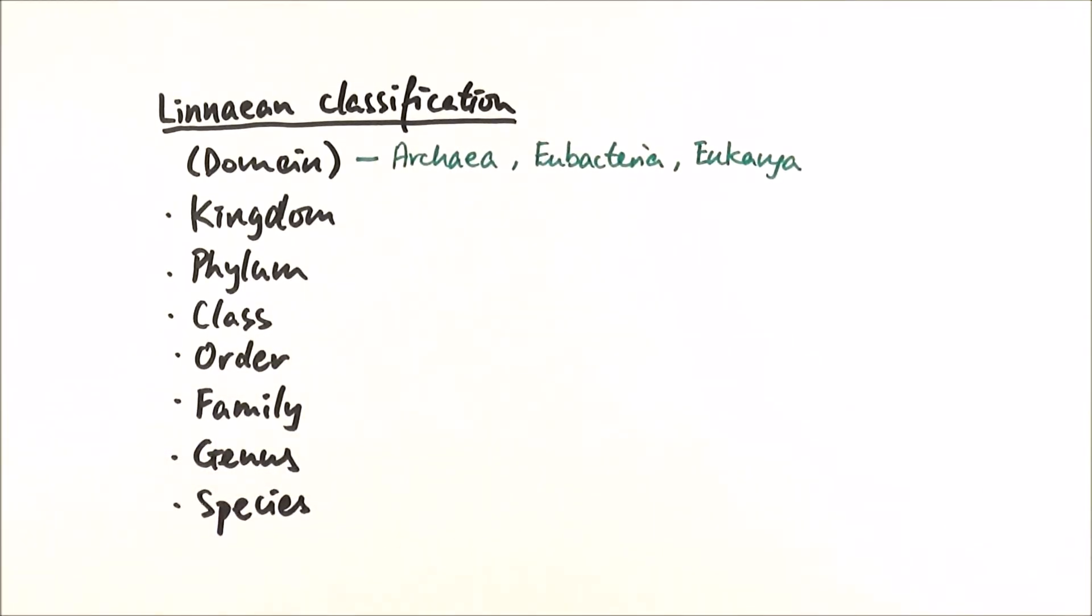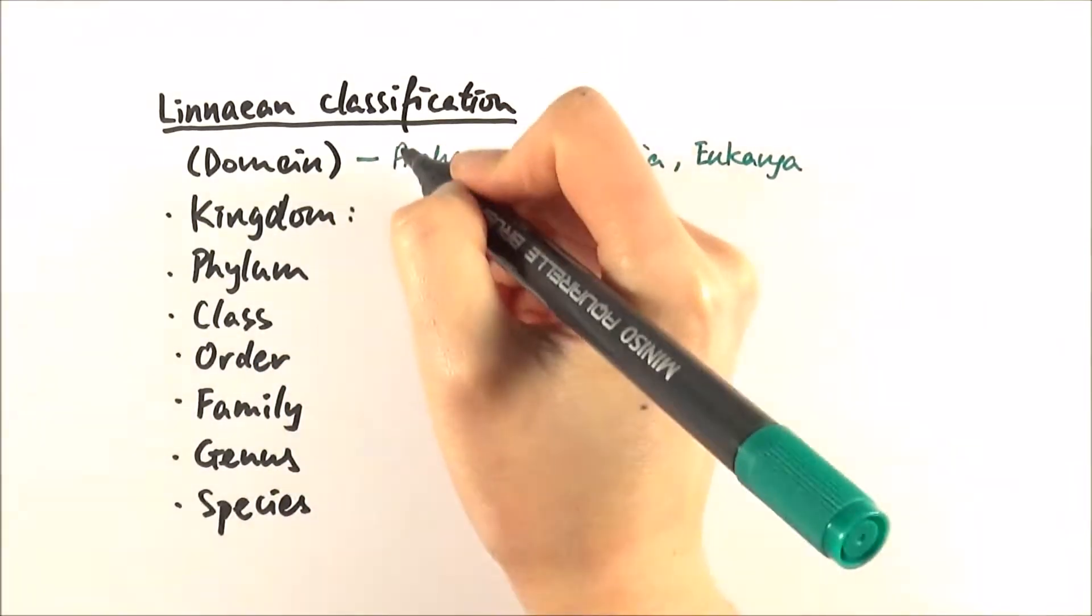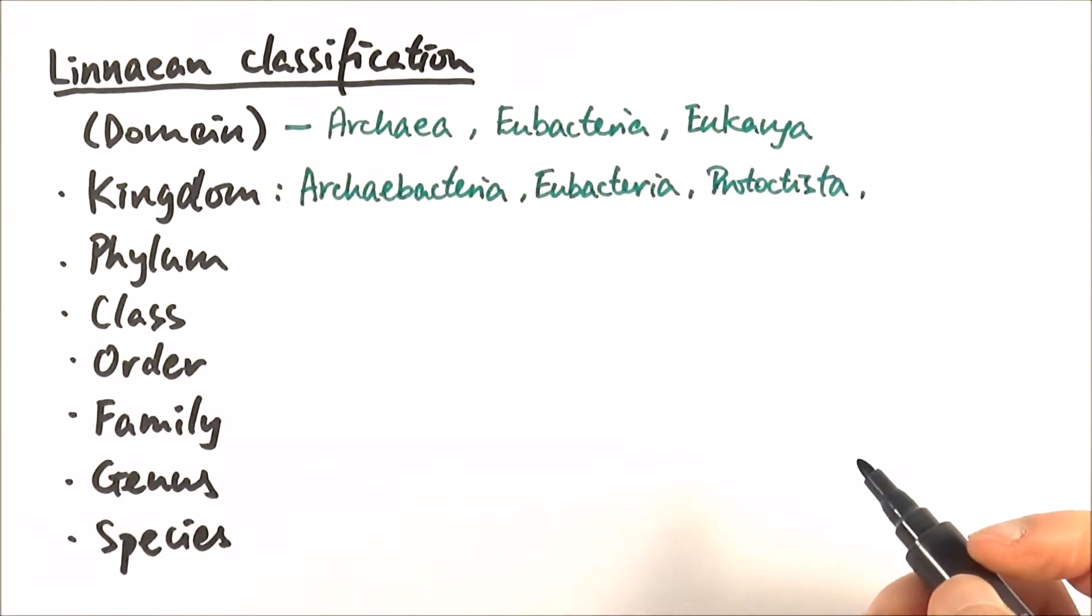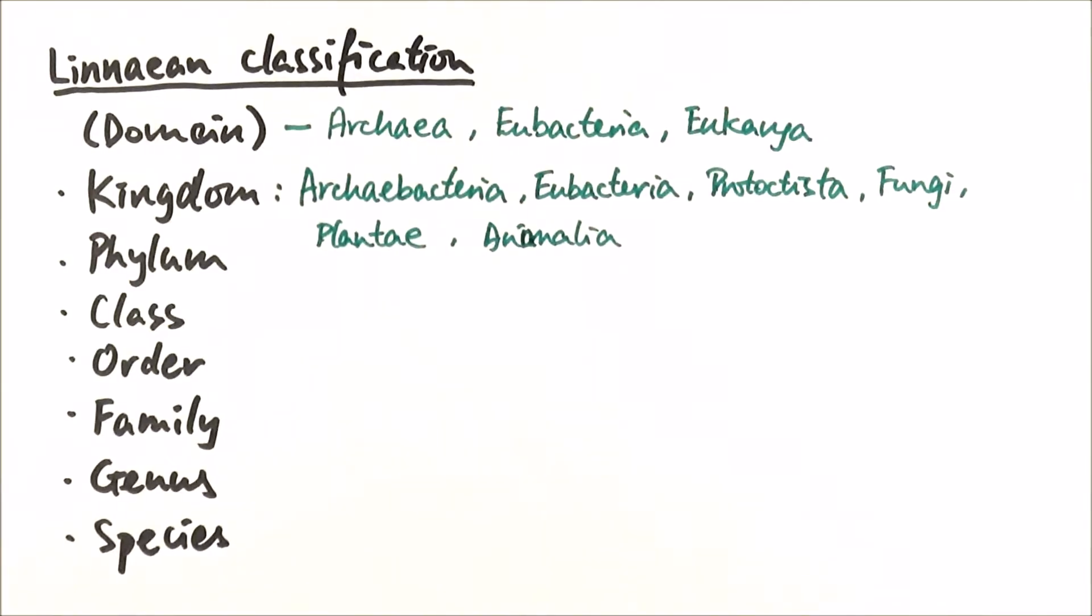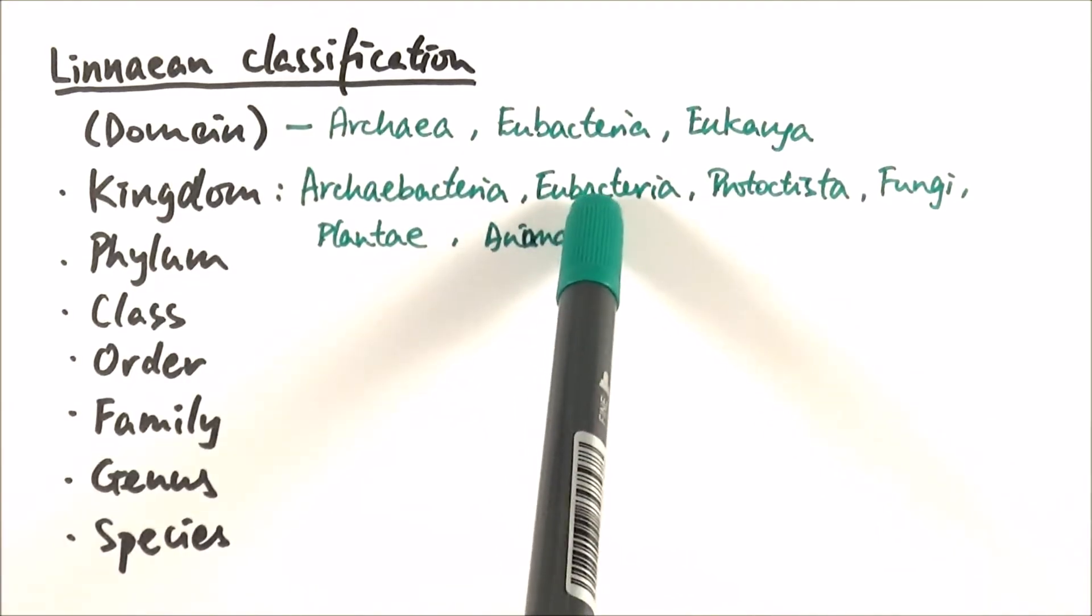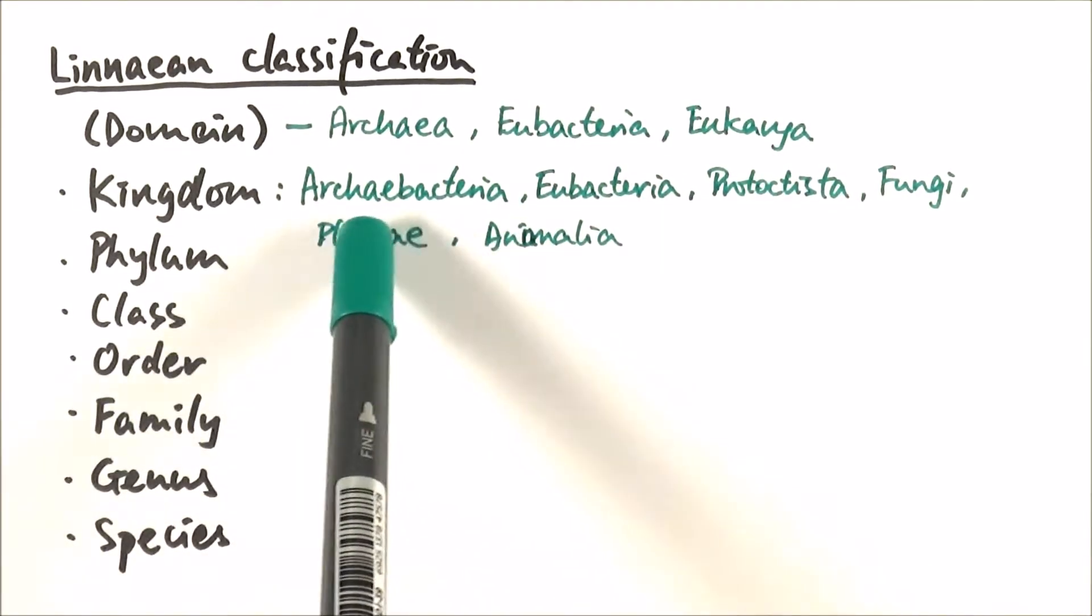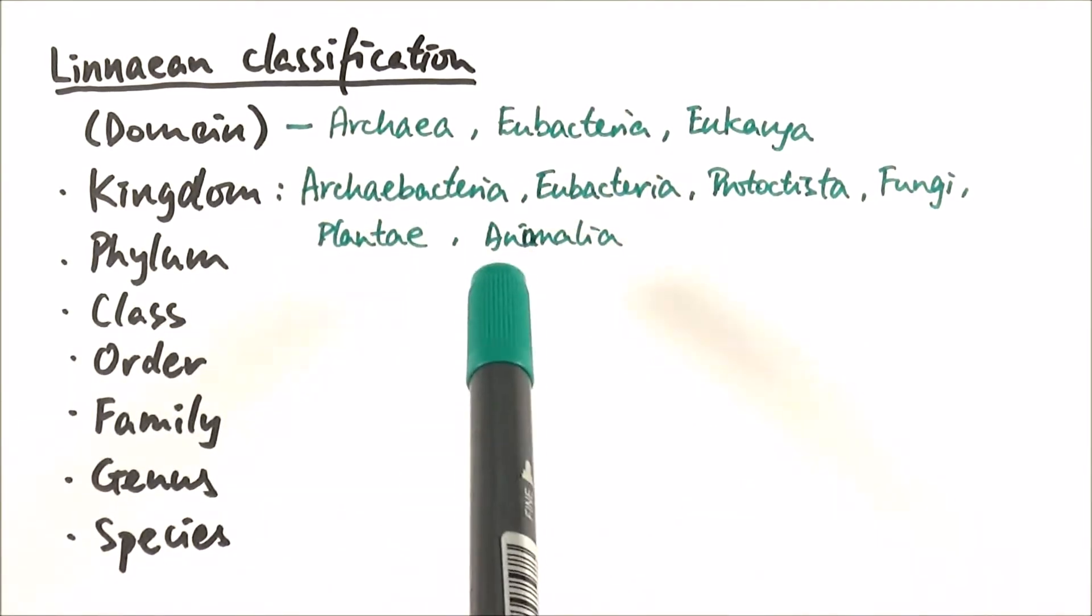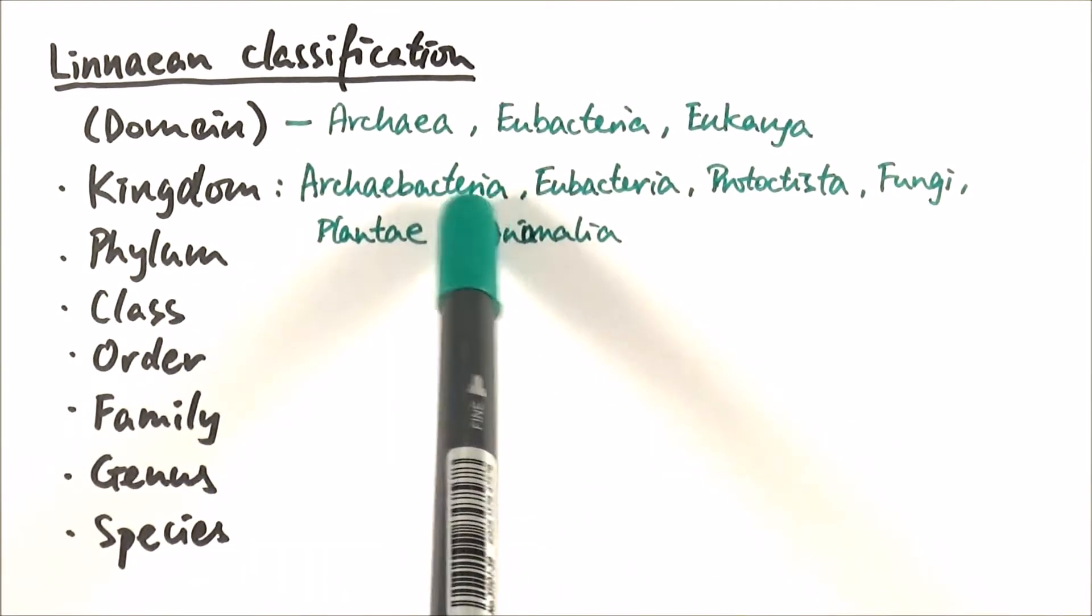So traditionally we've got five kingdoms but nowadays we actually say we have six kingdoms. We have Archaebacteria and Eubacteria, Protartista, Fungi, Plantae, and Animalia. Traditionally we have five kingdoms - Prokaryota, Protartista, Fungi, Plantae, and Animalia. But nowadays we've got the sixth kingdom which is Archaebacteria because they want to make a distinction within Prokaryota into these two different types of bacteria.